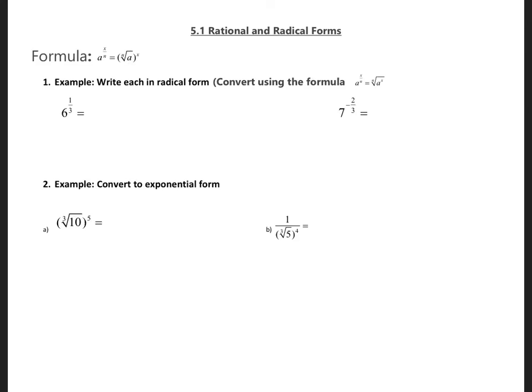Here we are looking at rational and radical forms, and we are going to start by rewriting into radical or rational form. This is the formula we shall be using. So if I have 6 raised to one-third, this will be the same as the cube root of 6, because the denominator n becomes the nth root.